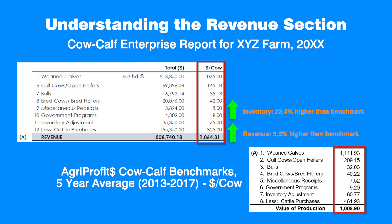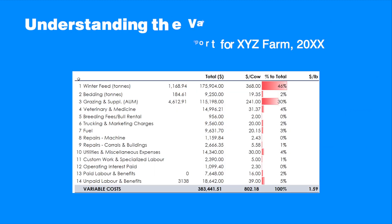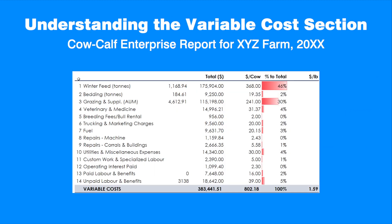Because per-pound calf sales are consistent with the benchmarks at $2.14 per pound, this suggests that physical performance needs to be examined to determine the sources of lower weaned calf sales on a per-cow basis. Let's look at the producer's costs, starting with variable costs. They comprise feeding, grazing, medical, labor, and other costs that directly relate to the level of production. In this example, the winter feeding cost is $368 per cow, or 46% of variable costs.